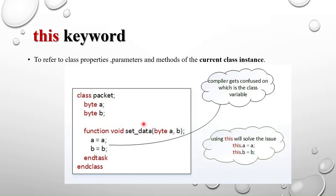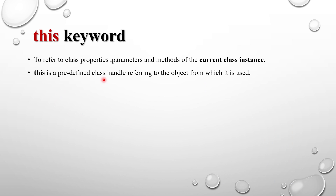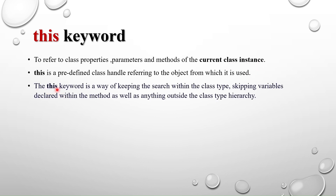'this' is a predefined class handle referring to the object from which it is used. Just like semaphores and mailboxes are predefined classes, 'this' is a predefined class handle. Wherever the 'this' keyword is used, it belongs to that class only and refers to the current class instance. It is a way of keeping the search within the class type, skipping variables declared within the method as well as anything outside the class type hierarchy.